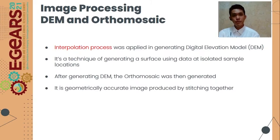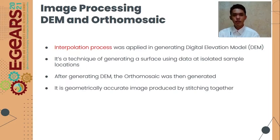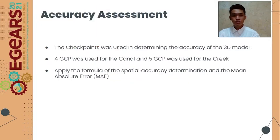After generating the DEM, the orthomosaic was generated — geometrically accurate images produced by stitching together individual images. Checkpoints were used to determine the accuracy of the 3D model.